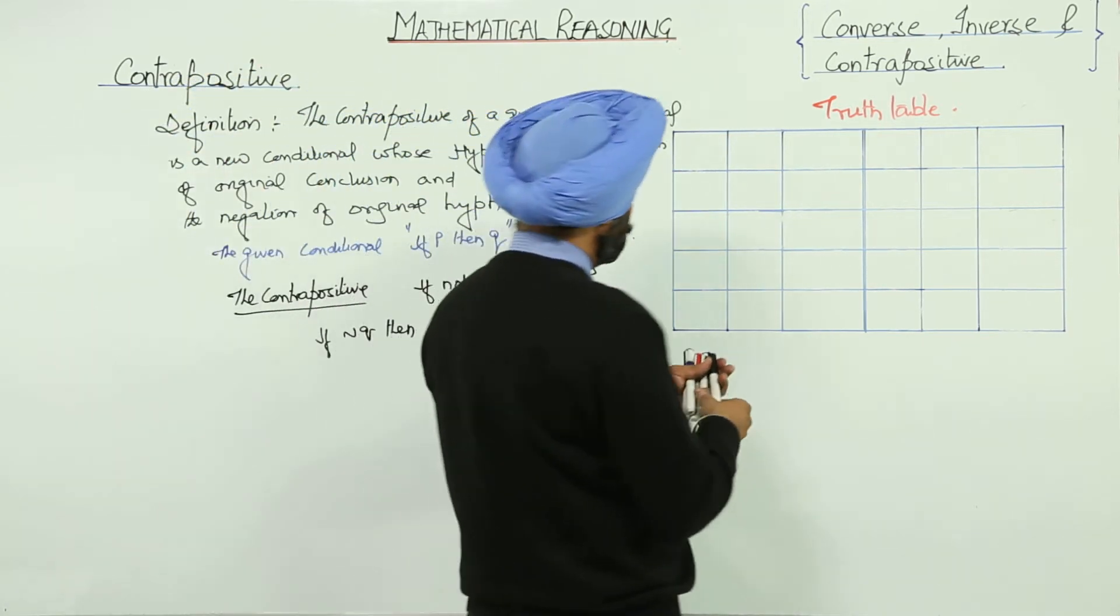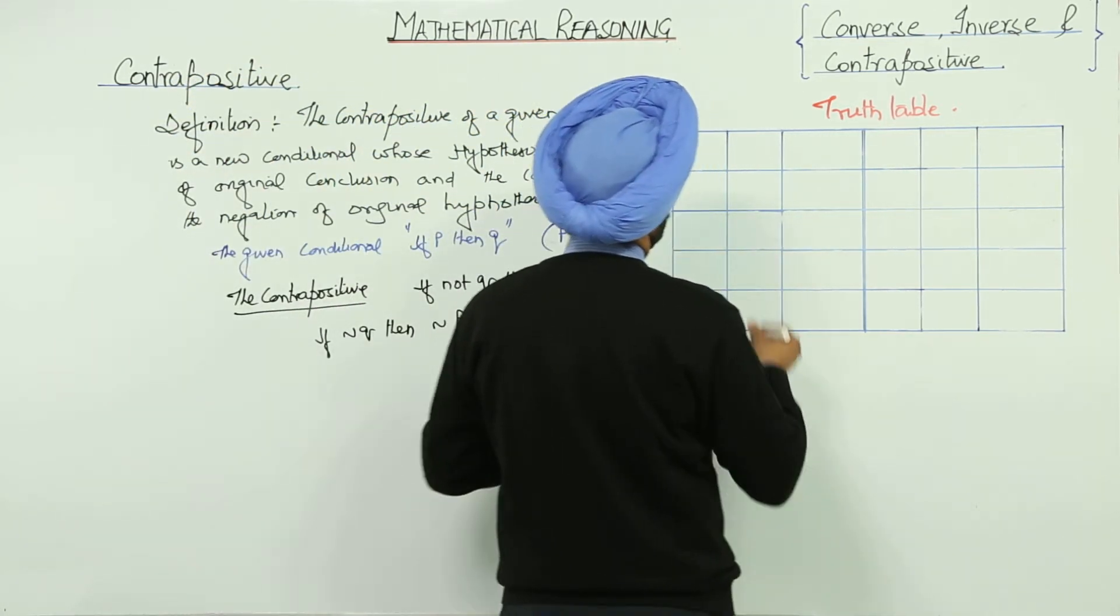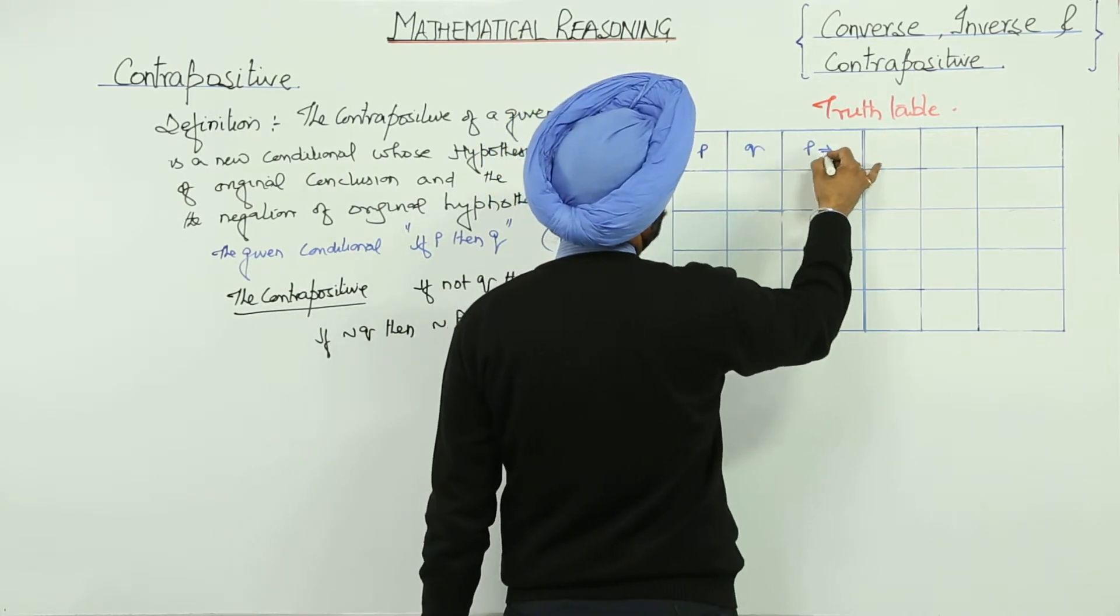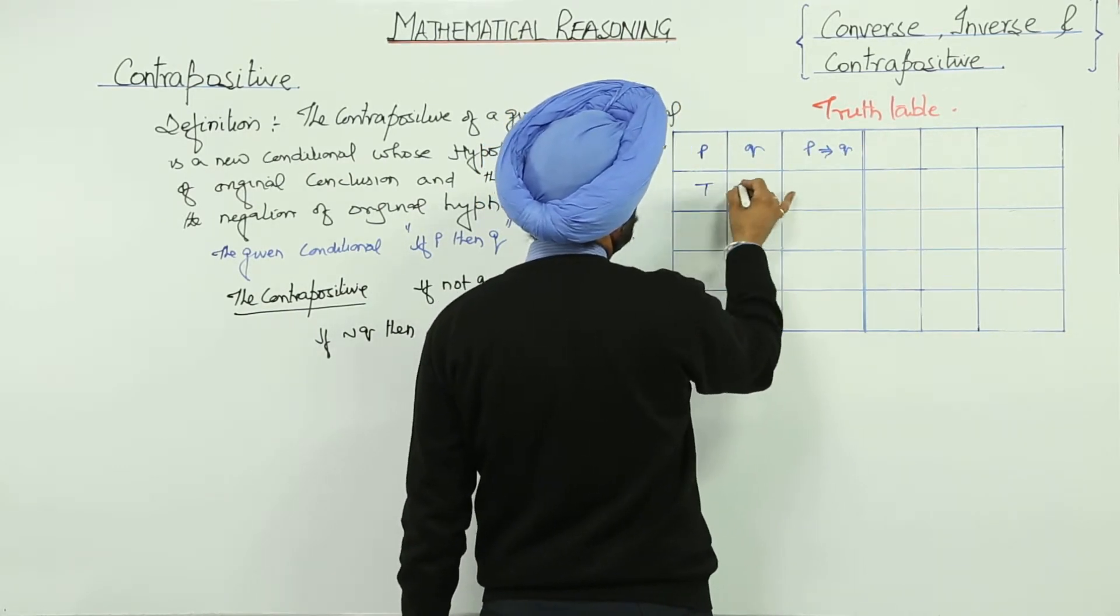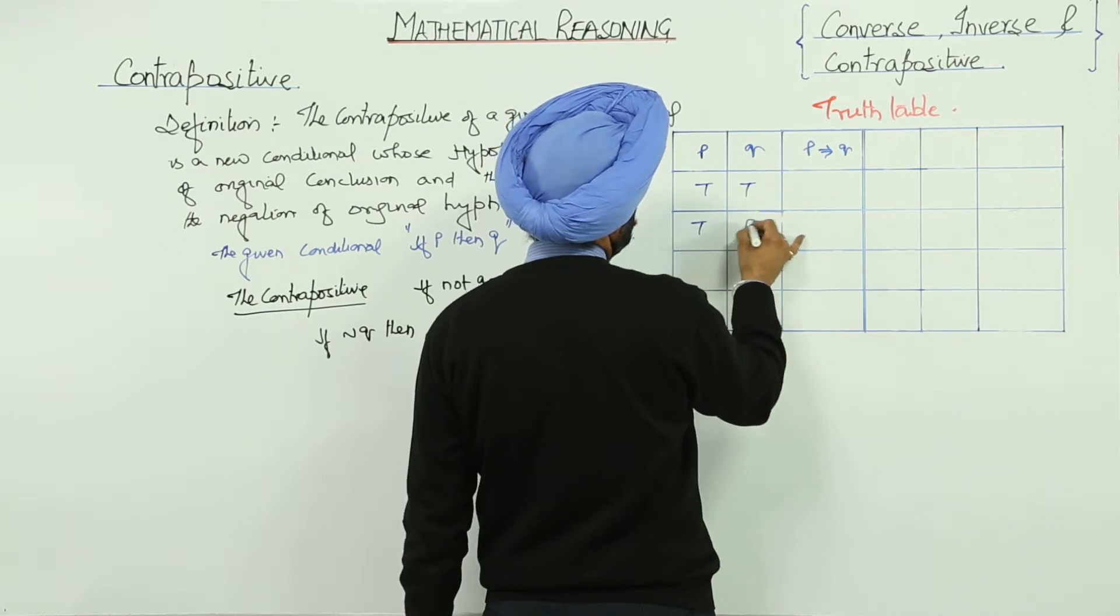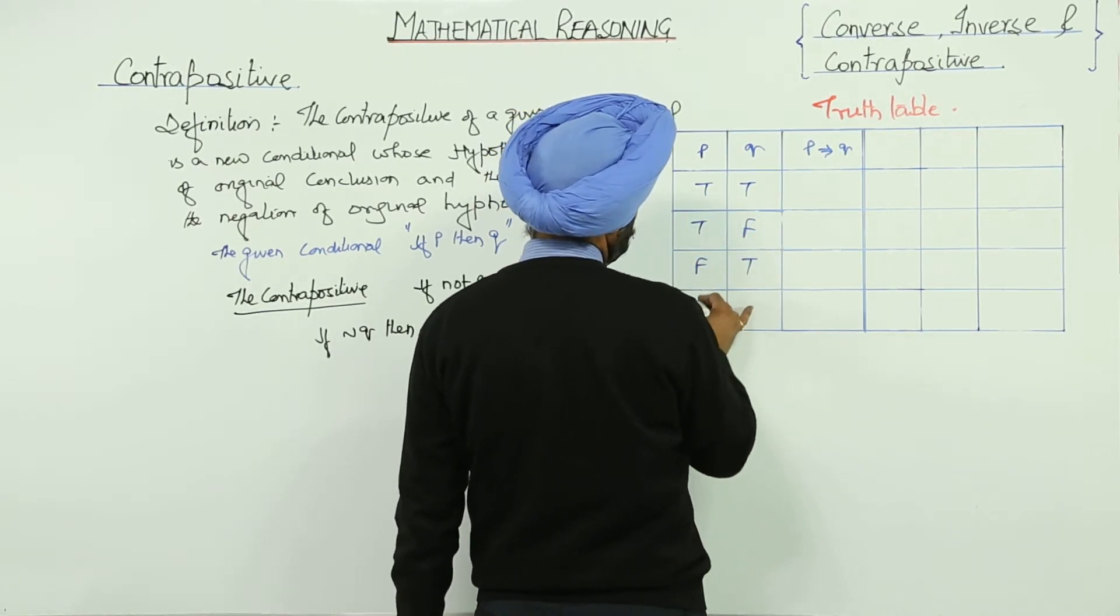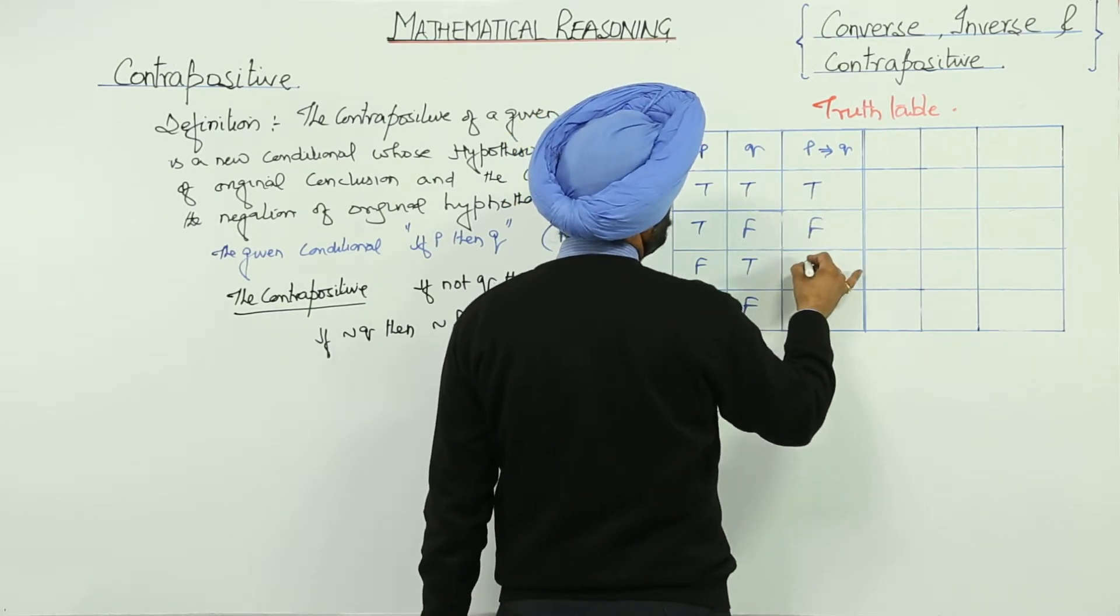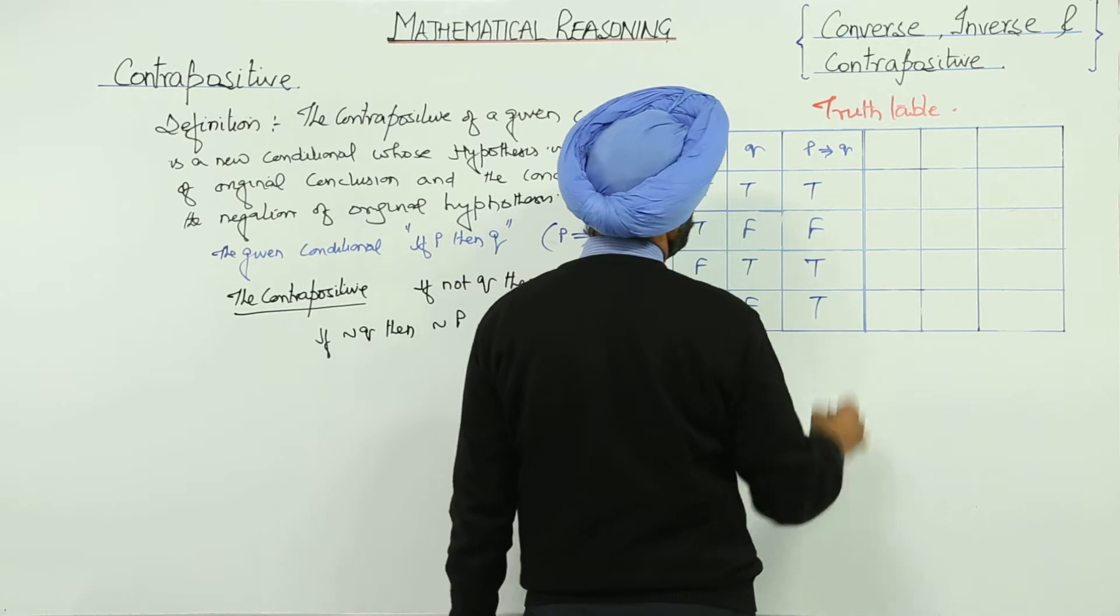Now, again for the truth table. So, P implies Q. True, false, true and true.